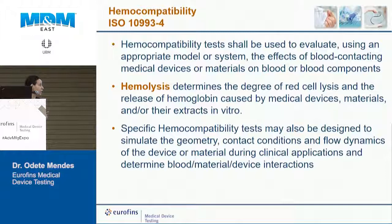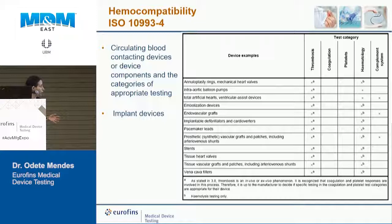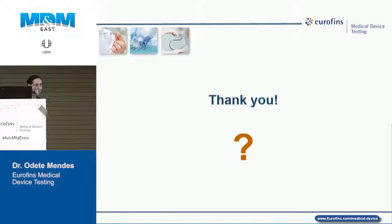Hemolysis — destruction of red blood cells — is a very common and important endpoint. ISO 10993 Part 4 provides a table listing device examples such as circulating blood-contacting devices, external communication devices, implantable devices, stents, and prosthetic valves, with the corresponding test categories required for each. This guidance allows you to look up your device type and immediately know what hemocompatibility tests are needed.